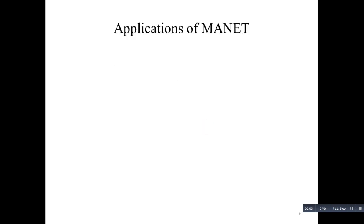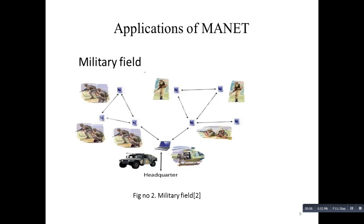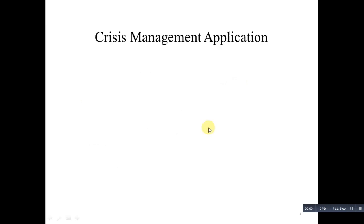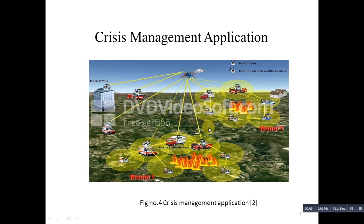Applications of MANET: All the technologies were initially developed keeping in mind military applications, such as battlefield use in unknown territory where infrastructure is impossible to establish. In this case, a network having self-organizing capacity can be effectively used where other technologies fail. Crisis Management Application: In case of natural disasters, restoring communication quickly is essential with ad hoc networks. Infrastructure could be set up in hours instead of the days or weeks required for conventional wireless communication.